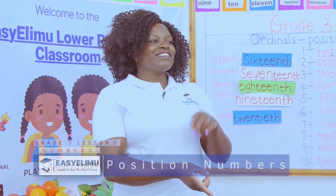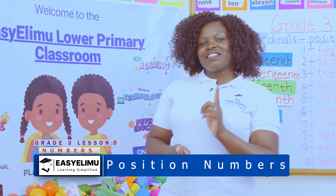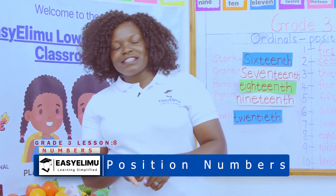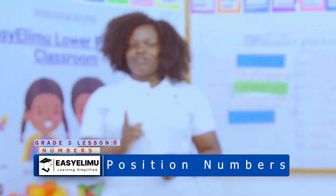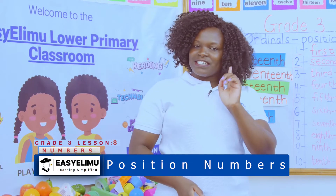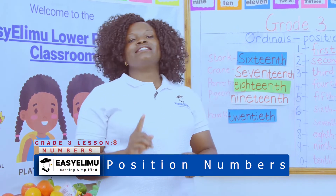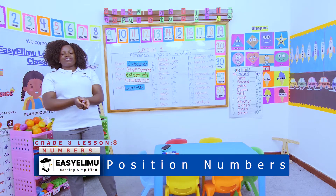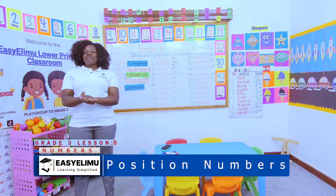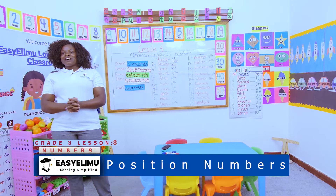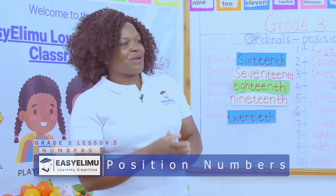We are counting, one, two, three, four, five, six, seven, eight, nine, ten, eleven, twelve, thirteen, fourteen, fifteen, sixteen, seventeen, eighteen, nineteen and twenty. How are you, Grade 3s? Are you okay? I am fine. It's a teacher annunciator. Welcome to Easy Limo Learning Simplified.